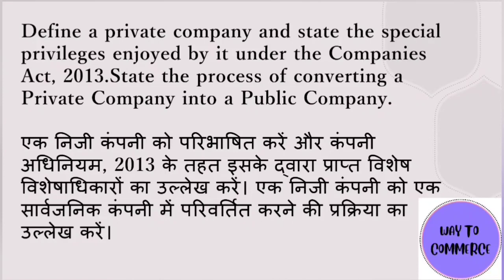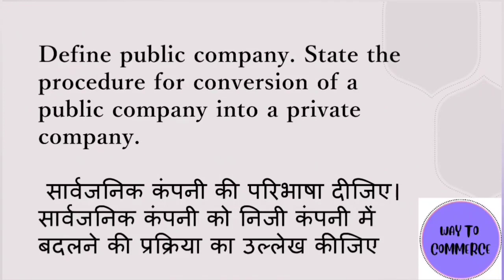Around five to six points are needed for the conversion process. The next question: define public company and state the procedure of conversion of a public company into a private company. First explain the public company, then write about passing a special resolution, filing a copy of the special resolution with the registrar of the company within 30 days, obtaining government approval, filing a copy of the altered articles, and reduction of membership — around 6-7 points in total. Private to public and public to private conversions are very important.